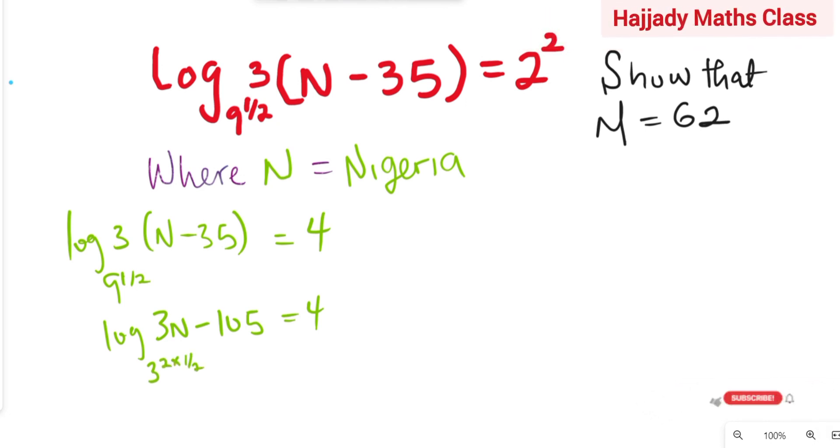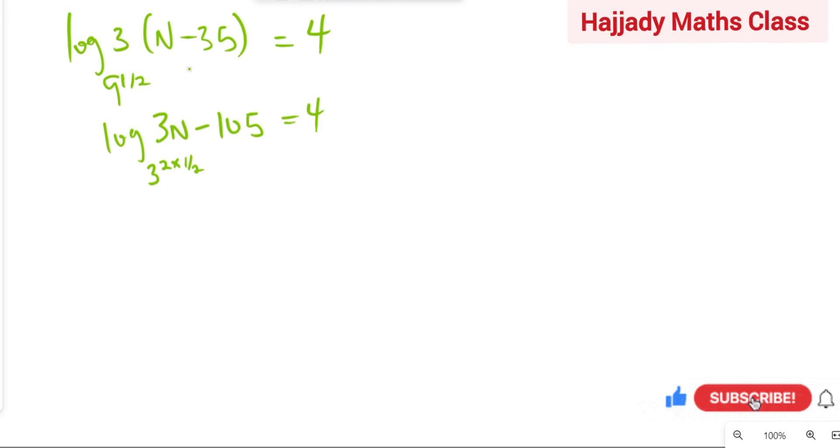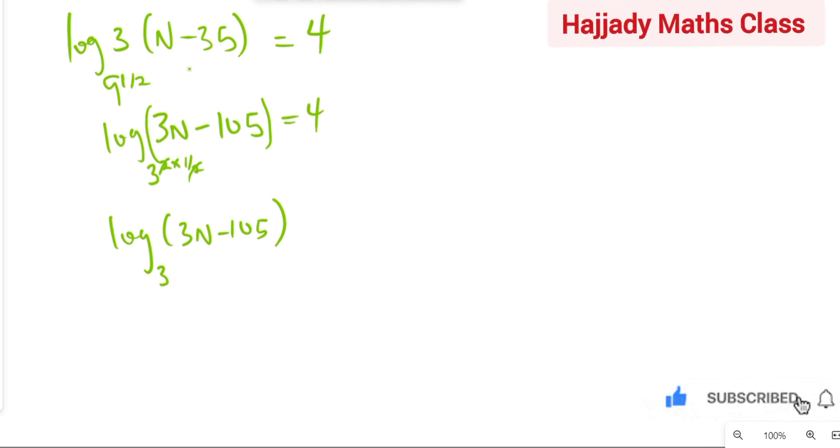So, here we have that log, let's put this in a bracket, log (3N - 105). The base now, the 2 is going to cancel out, and we have 3 as the base, which equals 4.